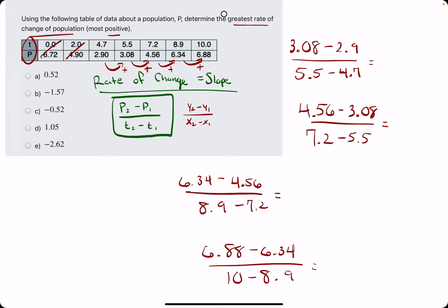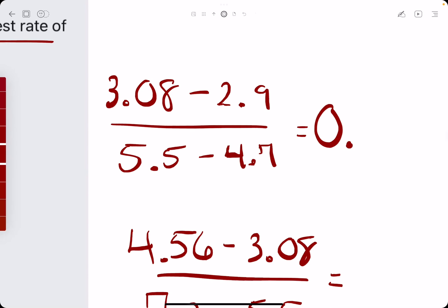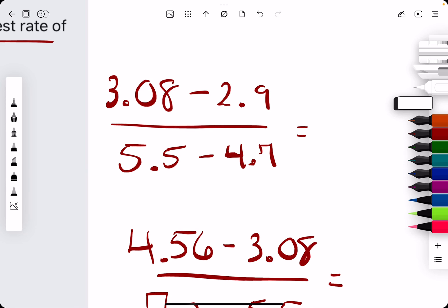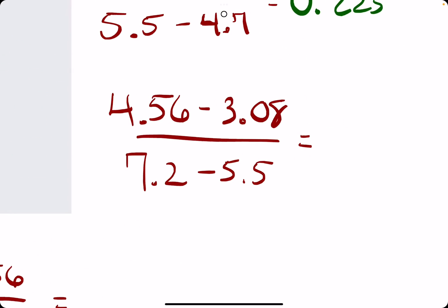So up top we get 0.18 divided by 0.8, and that'll give us approximately, I'll use a different color for these, we'll get about 0.225 for the first one.